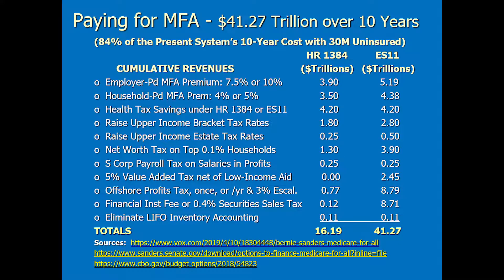The next one: offshore profits tax. The H.R. 1384 bill is advocating do this one time; we're saying do it all the time. We can raise $8.79 trillion by having an ongoing offshore profit tax, and this also encourages companies to be more onshore so they don't have to pay that tax — it brings a lot of production back domestically toward the country.